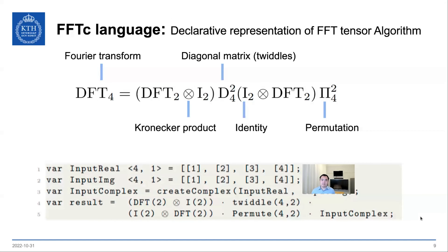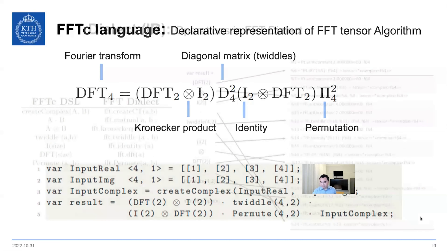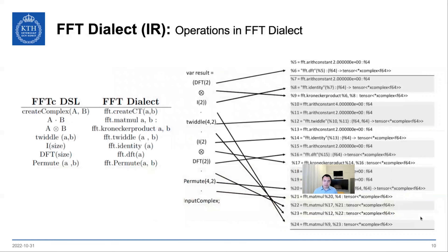For the front-end, the FFTc language, we try to design it to resemble mathematical expressions as much as possible, like the example shown here. And to support a variety of algorithms, such as Cooley-Tukey, Stockham, et cetera, we design some operations and data types, and we wrap them together in the FFT dialect. Here is an example showing the mapping between the operations in the DSL and in the FFT dialect MLIR, and also a small complete FFT example.